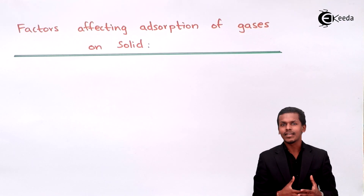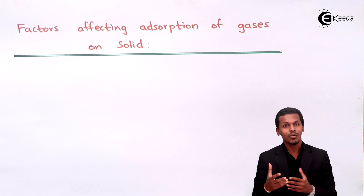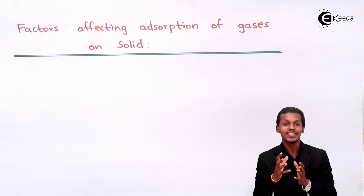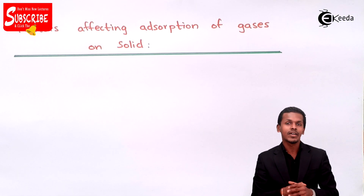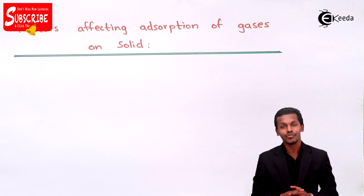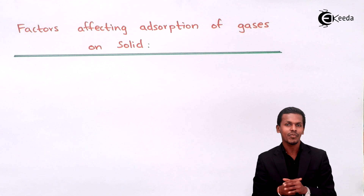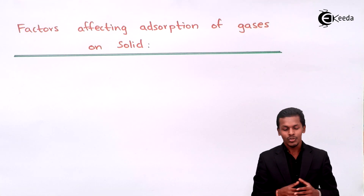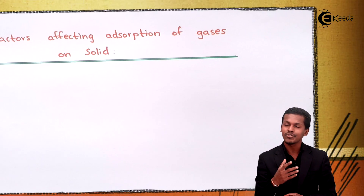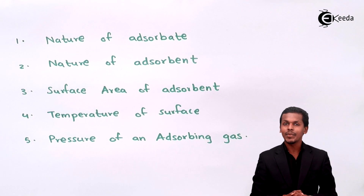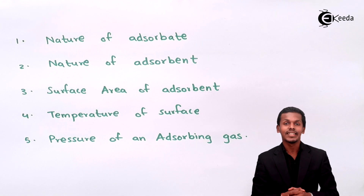We know that the gas can easily get adsorbed on the solid unless we provide certain conditions. So there are certain factors that depend on the adsorption of the gas on the solid, and what are those factors? This is what we are going to talk about in this lecture — the factors that will affect the adsorption of the gas on a particular solid.